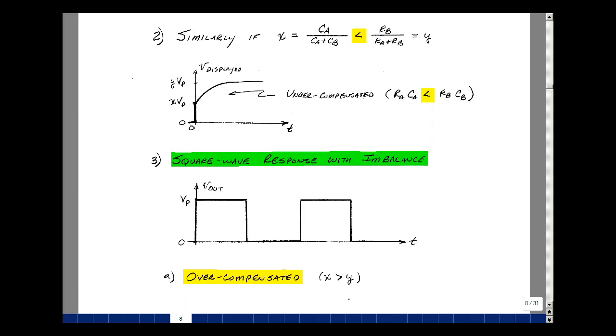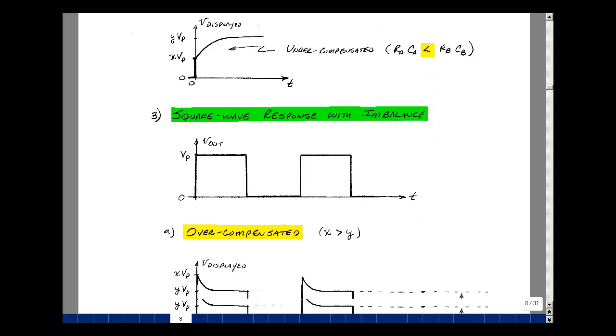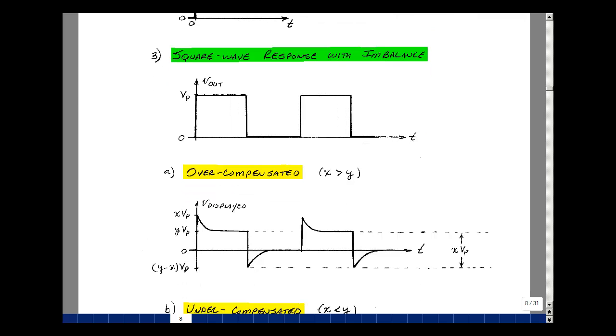So if you're given a square wave as an input, and you have an imbalanced probe, if you have the overcompensated case, we saw that you go from 0 to x times v sub p, and then eventually to y times v sub p, which is equal to our one tenth divider. Now, we analyze this side of the square wave, which had a positive slope.